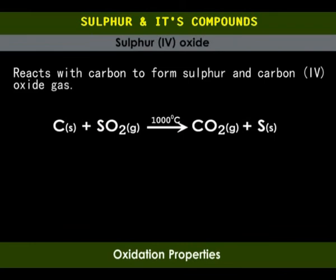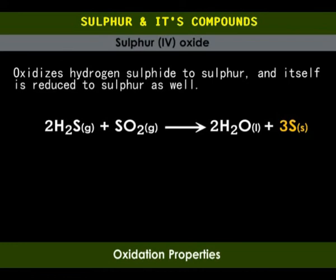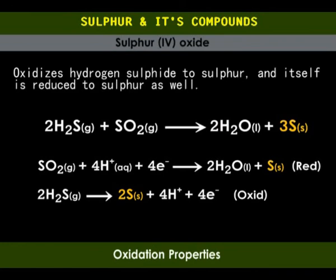When a jar of hydrogen sulfide gas is inverted over a jar of sulfur dioxide gas containing a little water, a yellow deposit of sulfur forms on the sides of the gas jars. In this reaction, sulfur dioxide is reduced to sulfur while hydrogen sulfide is oxidized to sulfur as well. Both sulfur dioxide and hydrogen sulfide are reducing agents; however, hydrogen sulfide is a stronger reducing agent. No reaction takes place when the jar containing sulfur dioxide is completely dry.